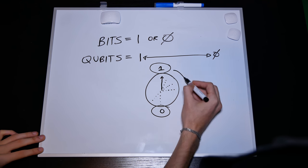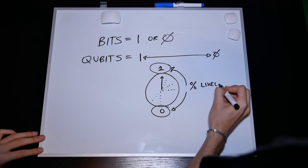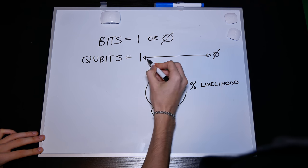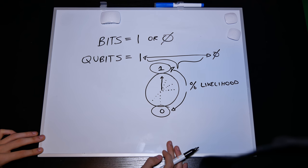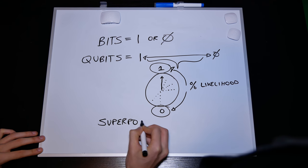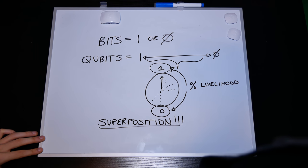Instead, the needle can point to areas in between the two poles and represent the likelihood of either becoming a 1 or 0 once the qubit is processed and observed. This area in between is what's known as superposition.